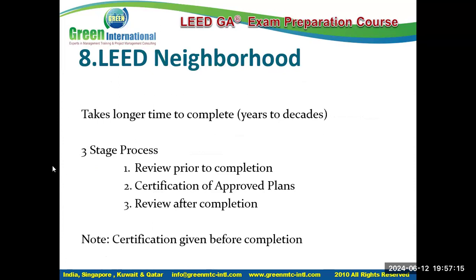LEED Neighborhood Development has a three-stage certification process: a review prior to completion, then a preliminary certificate issued based on the approved plan, and then after project completion, a final review and certificate. This allows developers to market a platinum-certified project even before construction starts, based on the approved plan, with a final certificate issued upon completion.